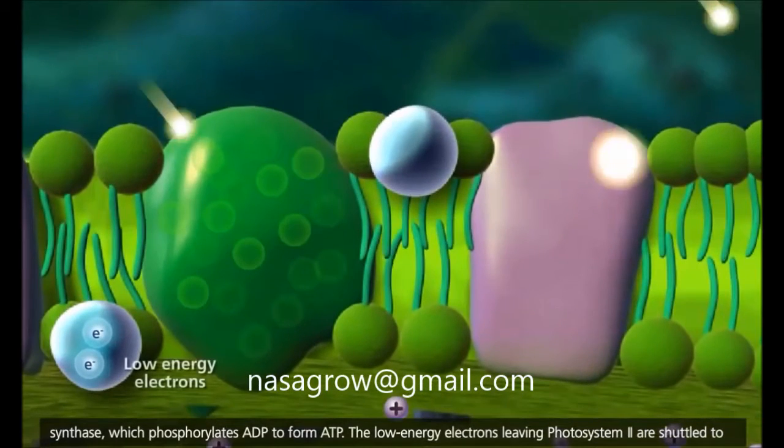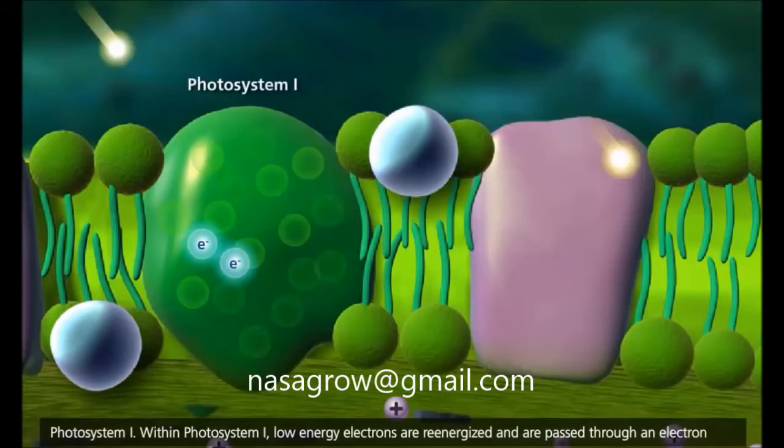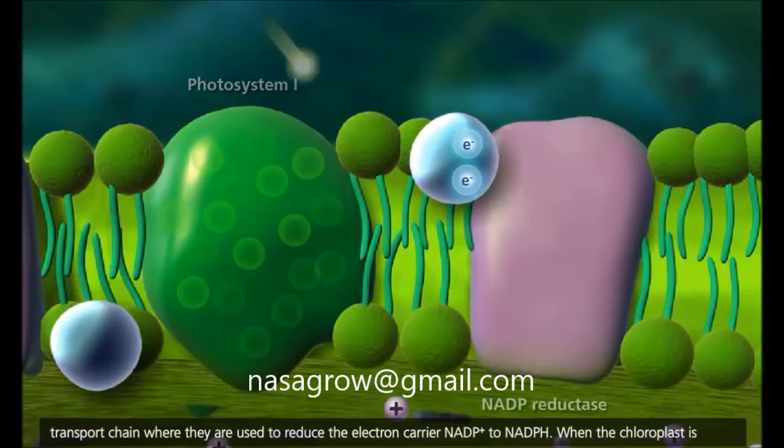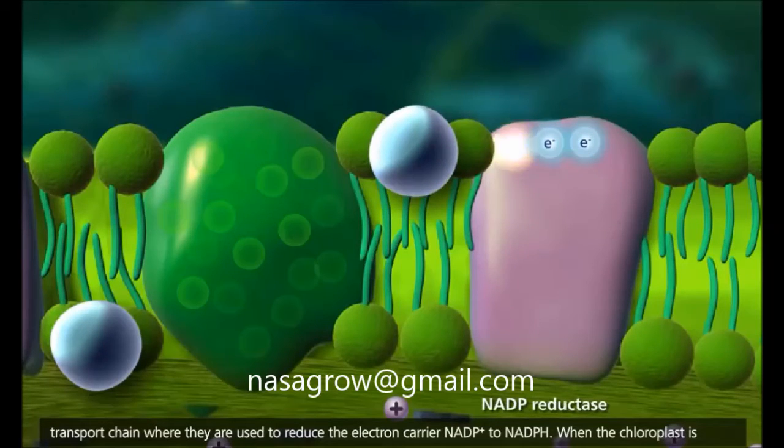The low-energy electrons leaving photosystem II are shuttled to photosystem I. Within photosystem I, low-energy electrons are re-energized and are passed through an electron-transport chain, where they are used to reduce the electron carrier NADP plus to NADPH.